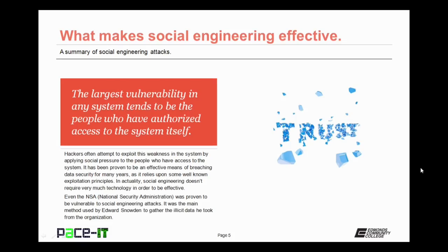The largest vulnerability in any system tends to be the people who have authorized access to the system itself. Hackers often attempt to exploit this weakness in the system by applying social pressure to the people who have access to that system.